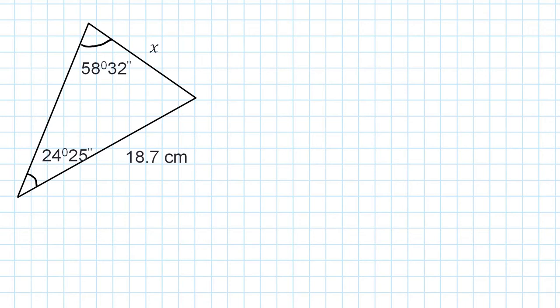To solve this non-right angle triangle we need to use the sine rule. The reason is you have two angles given here. That's why you need to use the sine rule. Just keep that in mind.